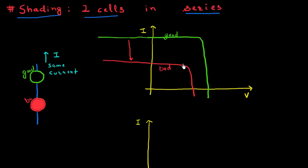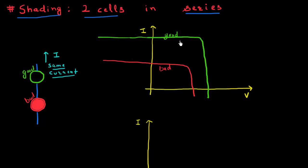You can see the short circuit current of this bad cell has decreased, and so has its open circuit voltage. So now, what would be the overall IV characteristic of these two cells connected in series? From high school physics or freshman engineering, when two elements are connected in series, their voltages add up, and the current through them remains the same. So the current through both cells would remain the same, while the voltage across them would add up. I notice that this good cell has a much higher current compared to the bad cell.